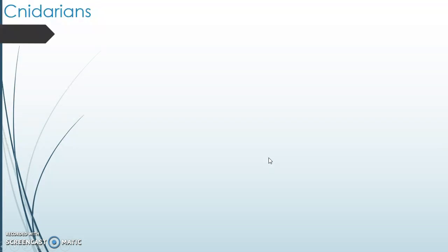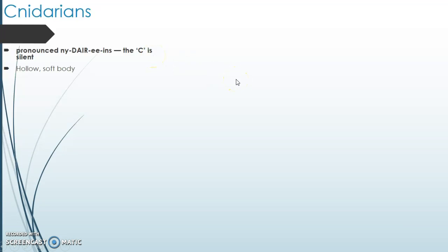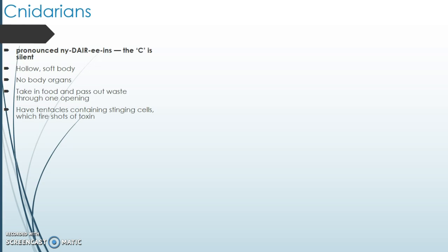Here's another group that's relatively simple. They're called the Cnidarians — it's pronounced Ni-dare-ee-ans, the C is silent. These guys have a hollow and soft body, and the layers of the body are very, very thin. Because of that, they don't need any specialised organs to help them function. They take food in and pass it out through the one opening, which is pretty gross. And they actually have tentacles, which have these special cells called stinging cells.